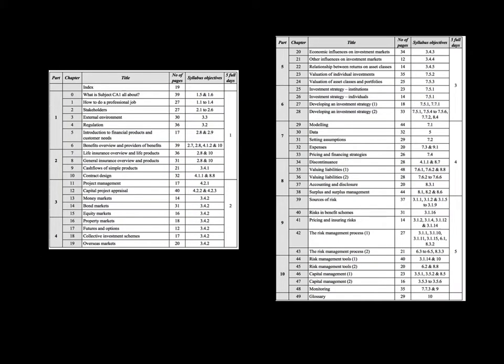The reason you need a big memory: let's look quickly at the 48 — yes, there are 48 chapters. The CT courses have like 10 to 14 chapters. This is 48. It covers how to do a professional job, what are stakeholders, the external environment, regulation, finance, product design, life insurance, general insurance, valuing assets, investment strategies, data, valuing liabilities, making models, setting assumptions, risk, risk management, risk management tools, and how to manage capital. There's a lot, a lot of material.